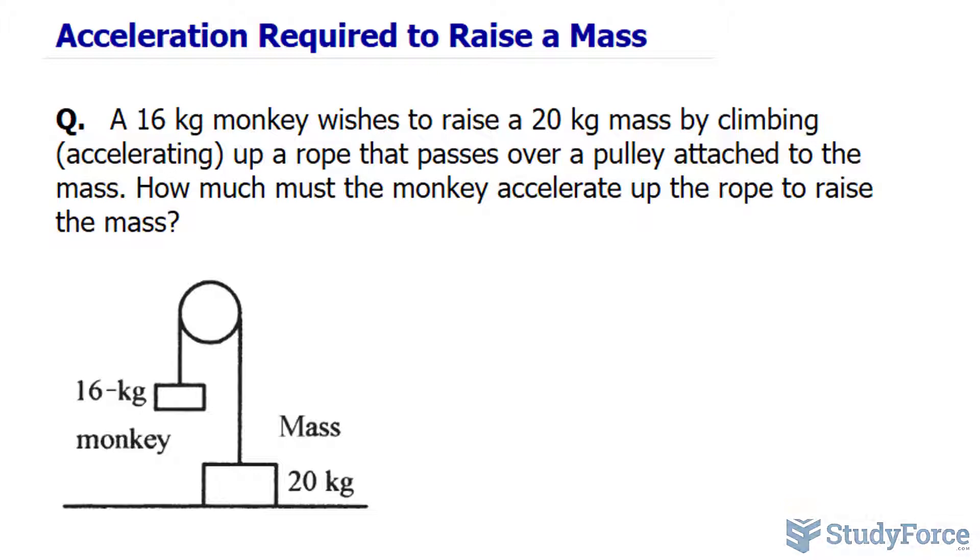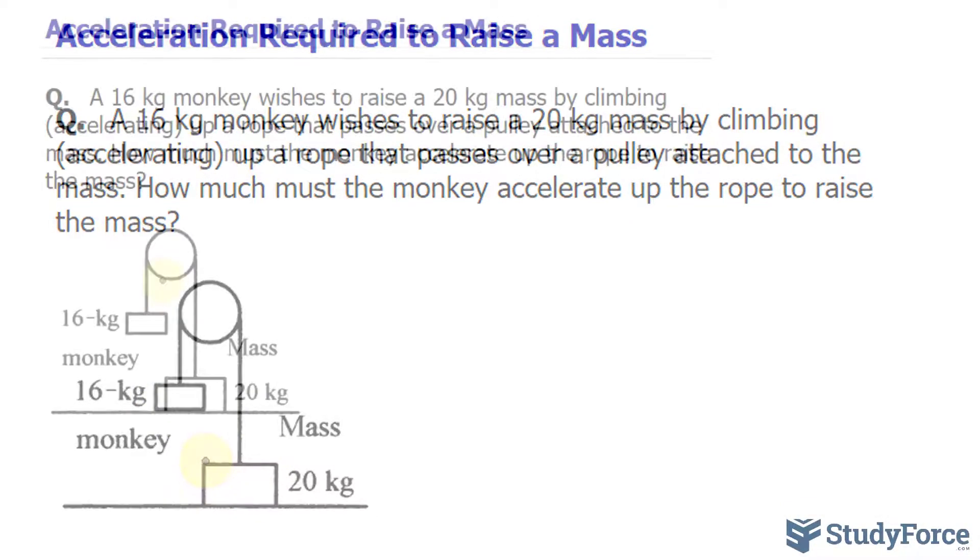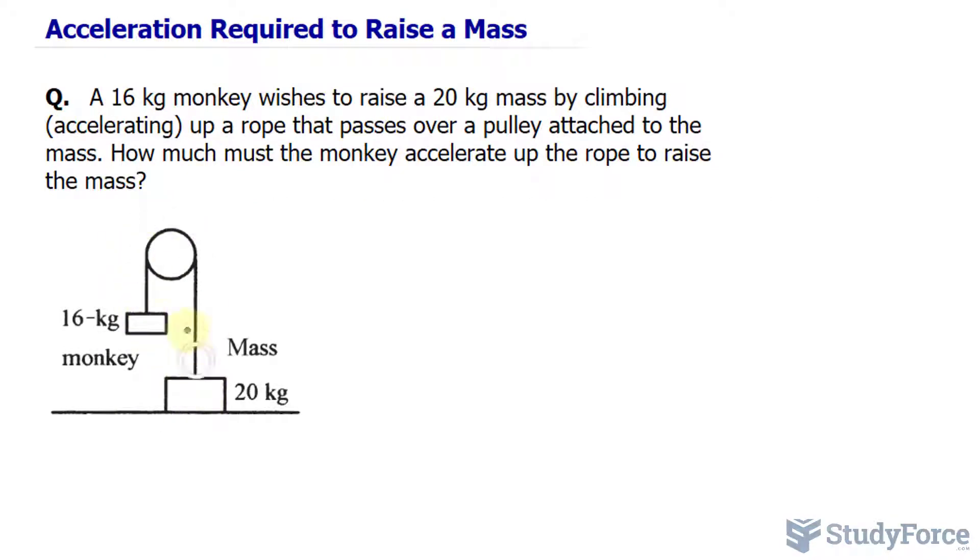Let's take a look at what's been drawn. We have a monkey that's hanging on this side and a mass on the other side, and the two masses are connected via a cord along this pulley. To figure this out, we need to find out how much tension each of these two masses are exerting along this cord. So let's do that first.